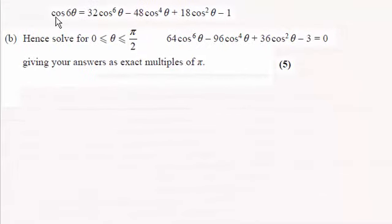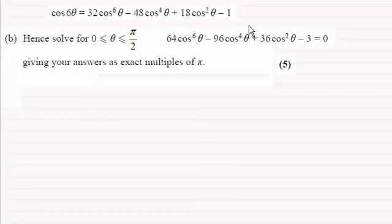Hi there, now in part A for this question we showed this result here for cosine 6 theta. Now we're being asked to hence solve between 0 and pi upon 2 this equation, giving your answers as exact multiples of pi.